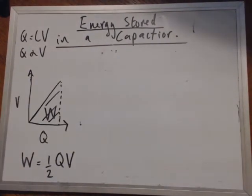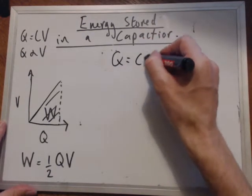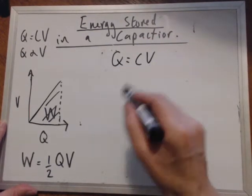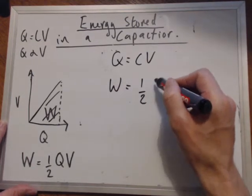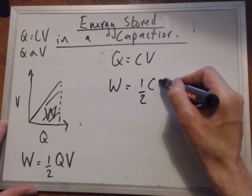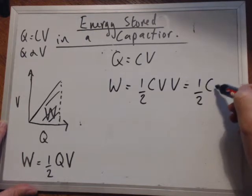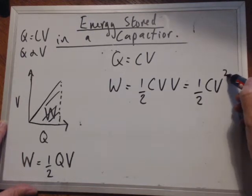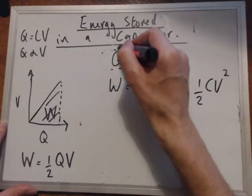So if work equals QV, and Q equals CV, we can substitute CV into there to give us work is equal to a half times Q, which is CV, times V, which is equal to a half CV squared.